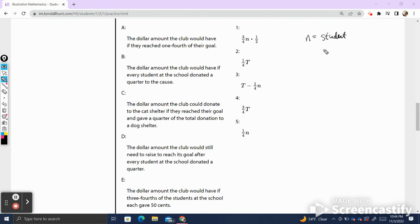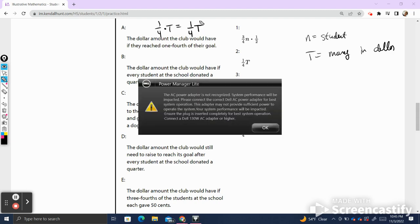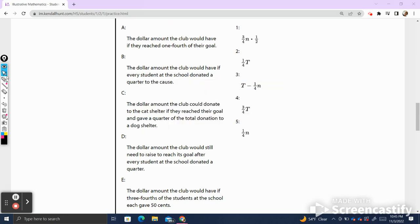Let's go ahead and identify our variables. Again, n is equal to the number of students and T equals money in dollars. We have to remember that we're identifying our number in dollars and not cents. Let's start matching. A says the dollar amount the club would have if they reached one fourth of their goal. Well, one fourth times our total goal, which is T, is equivalent to writing one fourth of T, which matches with number five. I apologize. Let's make sure I'm plugged in correctly. That over there matches with five. I'm going to write five next to my A.